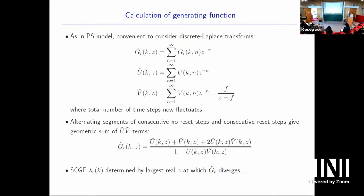Every trajectory is an alternating sequence of Ũ and Ṽ sections in the Z-transform picture, so I get a geometric sum. The Laplace-transformed generating function for the full process looks like a rational function with the familiar denominator 1 − Ũ·Ṽ from summing a geometric series. To find what happens at long times, I look for the poles — specifically, the largest real value of Z at which this diverges.